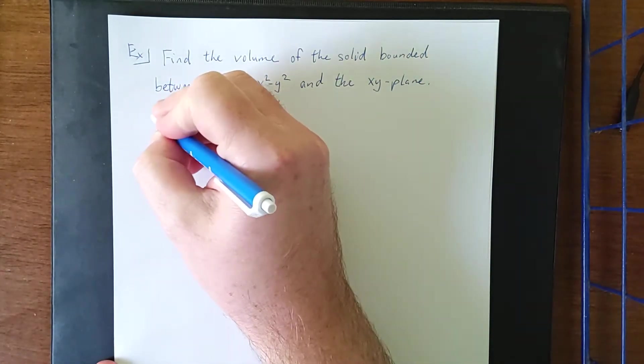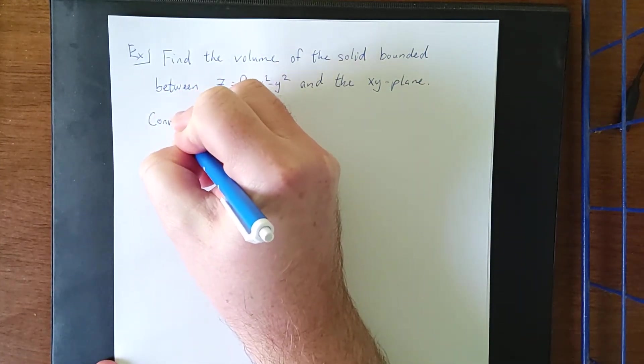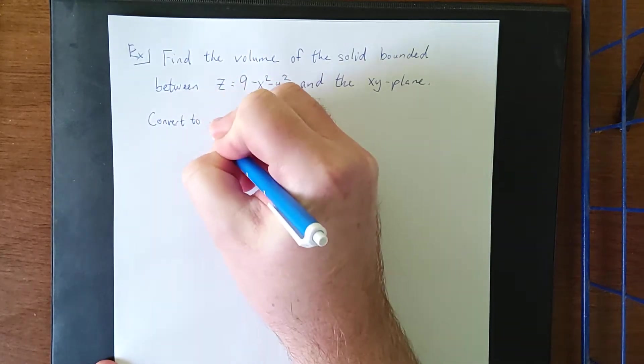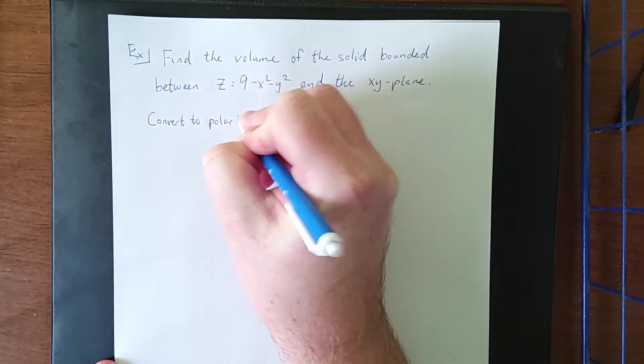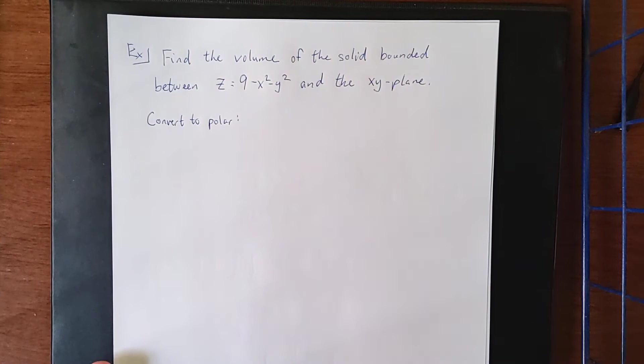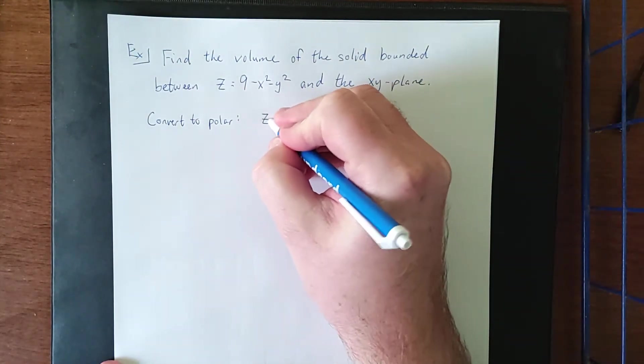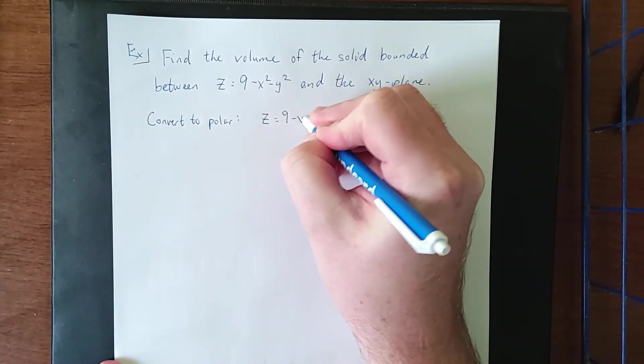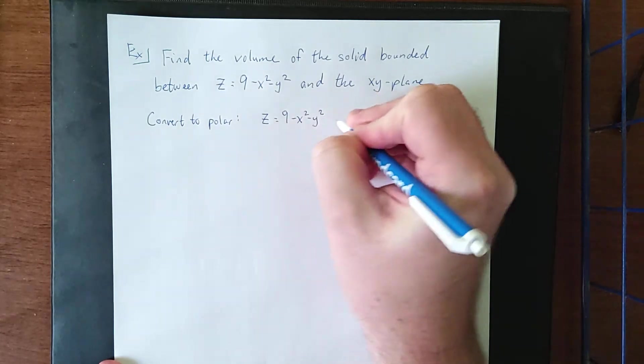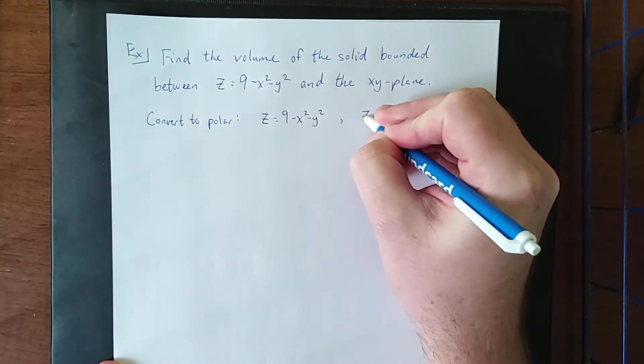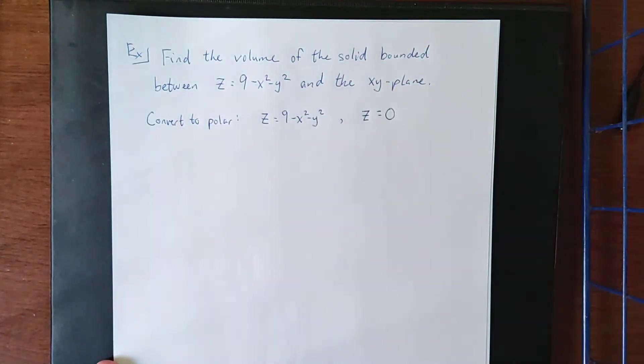So what I'm going to do is convert to polar coordinates. Now by converting to polar coordinates, I mean I'm going to take my z equals 9 minus x squared minus y squared and my xy plane, which is z equals 0, and try to figure out what those two things look like.